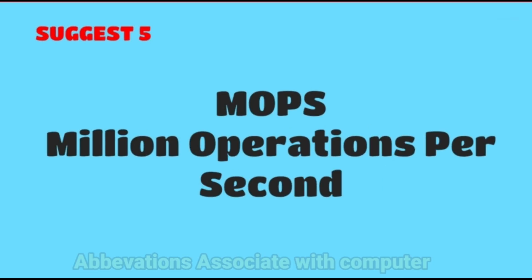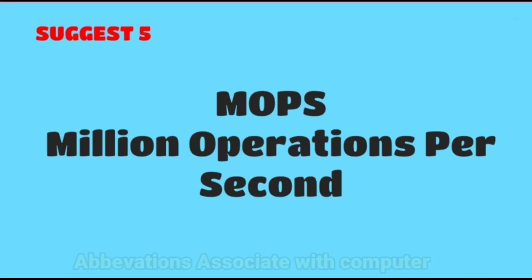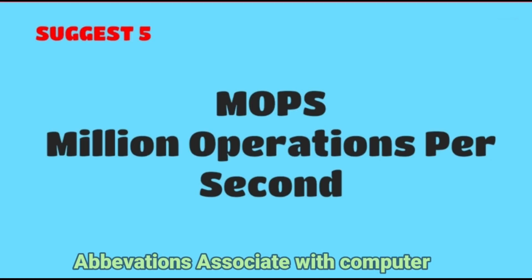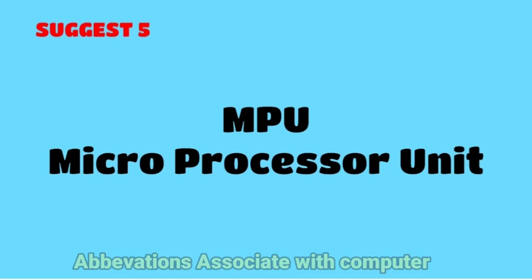The full form of MOPS is Million Operations Per Second. The full form of MPU is Microprocessor Unit.